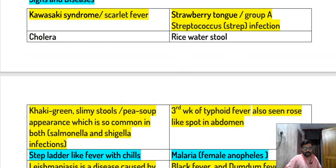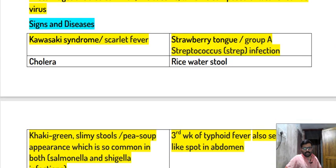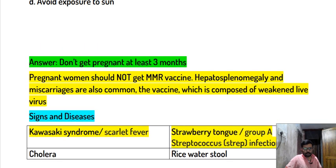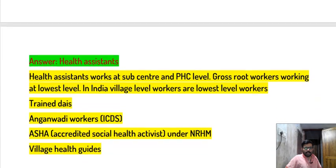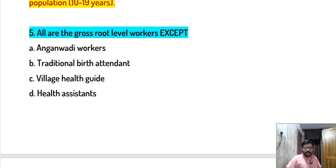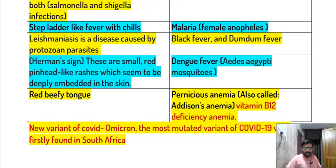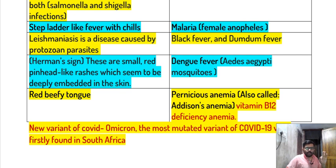This is the 16th video in the community health nursing series. The video covers important points for exam preparation, including topics in sociology, research, education, and administration. Questions have been prepared to help students score well.